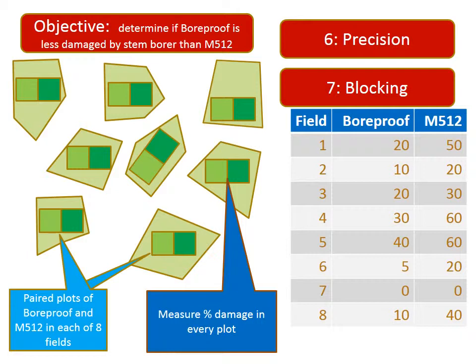Rather than taking a whole field as my experimental unit, I mark out two 10x10-metre plots in each field. On the left-hand plot I grow bore-proof, and on the right-hand plot, M512. Now when I compare the two, I am comparing them in the same fields. The field-to-field variation does not mess up the comparison, and I can get a more precise result. I have used the principle of blocking, with the fields being my blocks.